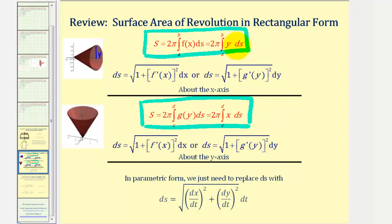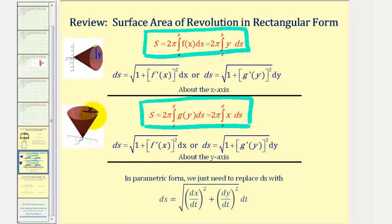Differential s is a differential of arc length, representing a small piece of the arc length, which we're rotating about the x-axis. And then about the y-axis, notice how the formula contains x, because the radius r is a horizontal distance. Again, differential s represents a small piece of the arc length, which is being rotated now about the y-axis.